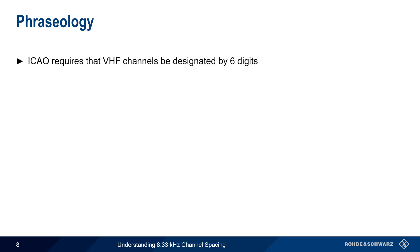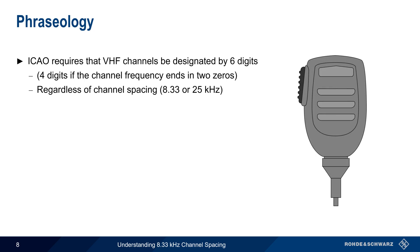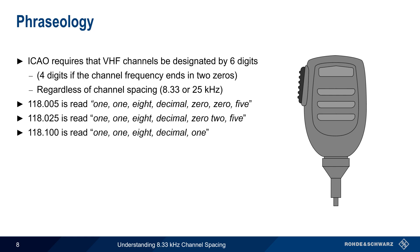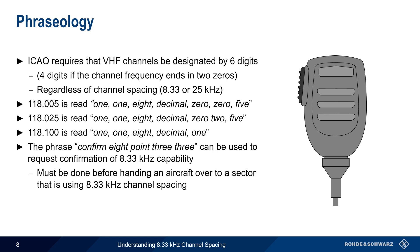ICAO — the International Civil Aviation Organization — requires that all VHF channels be designated using six digits, although four digits can be used if the channel frequency ends in two zeros. This applies to both 8.33 kHz and 25 kHz channel spacings. ICAO also specifies the phraseology, or the way that these frequencies should be read. For example: 118.005, 118.025, and 118.1 — note that we can omit the final two zeros in the last case. ICAO also specifies that the phrase 'confirm 8.33' can be used to check if an aircraft supports 8.33 kHz channel widths, and this must be done before an aircraft is handed over to a sector that uses this spacing. The reply is either 'affirm' or 'negative 8.33.'